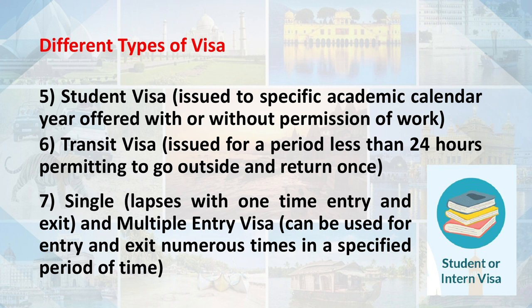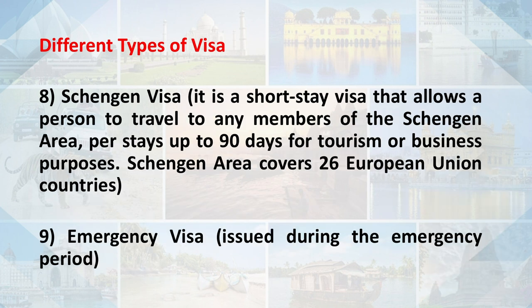Seventh, single entry visa, which lapses with one time entry and exit, and multiple entry visa, which can be used for entry and exit numerous times in a specified period of time. Eighth, the Schengen visa, a short stay visa that allows a person to travel to any member of the Schengen area, per stay up to 90 days for tourism or business purposes. The Schengen area covers 26 European Union countries.